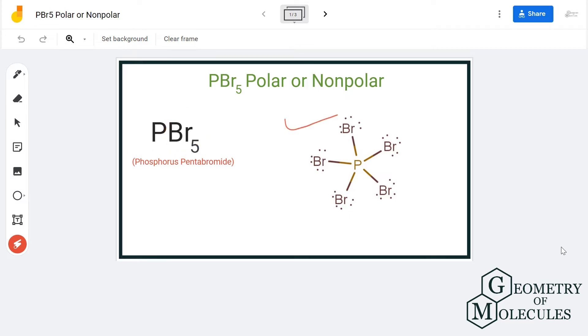To understand its polarity, we will first look at its Lewis structure followed by its shape. So here is the Lewis structure of PBr5 in which all bromine atoms are arranged symmetrically around a phosphorus atom.